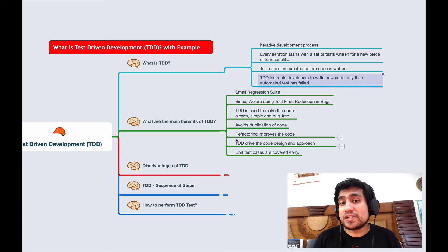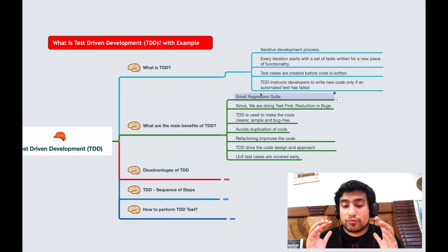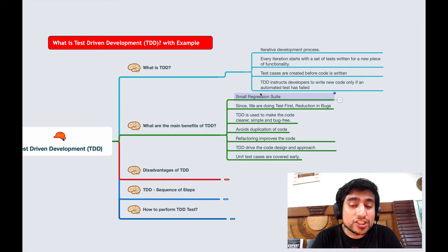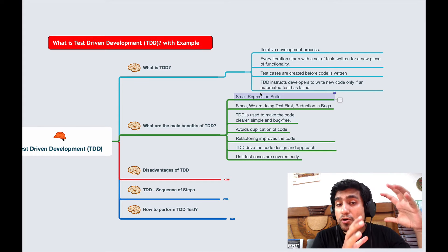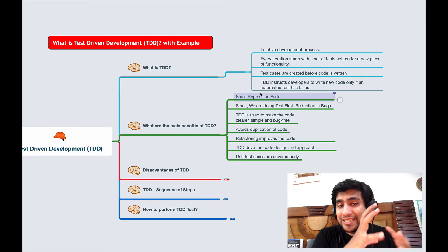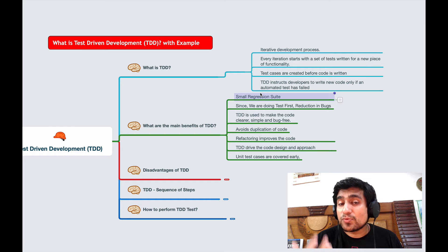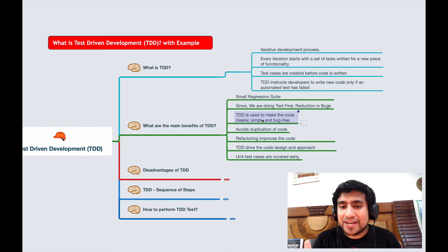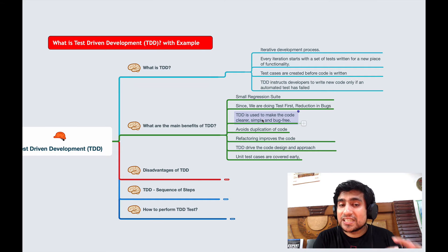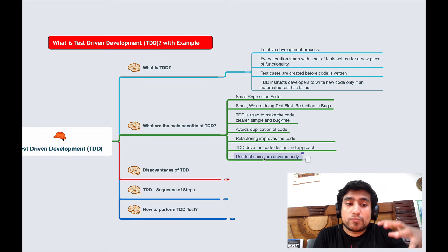If you follow this TDD development process, there will be a small regression suite since we are doing test-first. There will be a reduction in bugs because the test cases you have created are already handled in the code. TDD is used to make the code cleaner, simpler, and bug-free. It avoids duplication, improves refactoring of code because we have mapped test cases to functionality, and unit test cases are covered early.